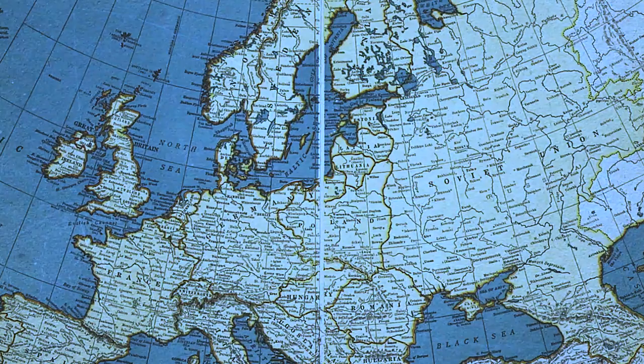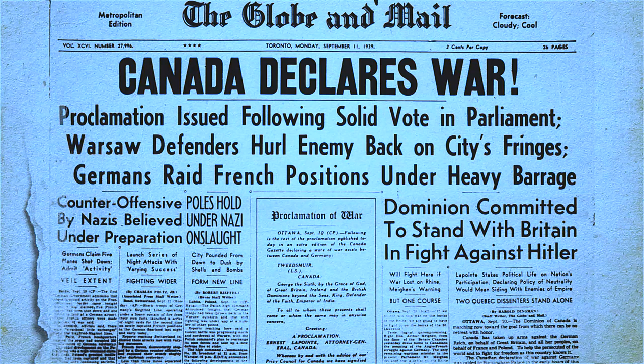On September 1, 1939, following the annexation of Austria and part of Czechoslovakia, Nazi forces invade Poland. Poland is an ally of France and Great Britain, and as Germany refuses to withdraw its troops, the Allies declare war on September 3.